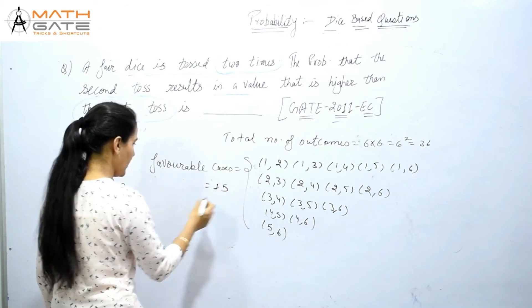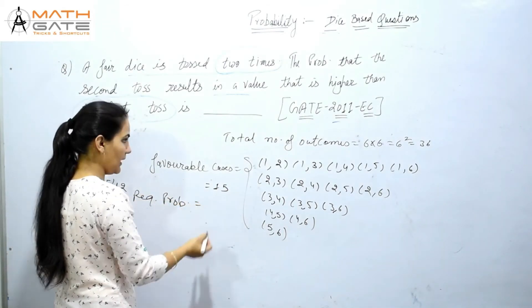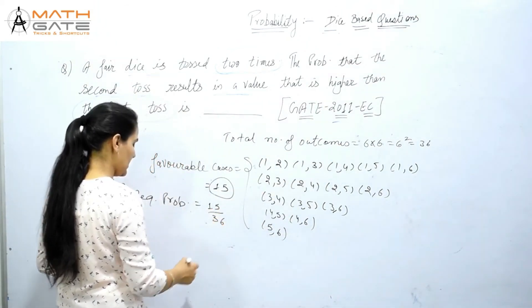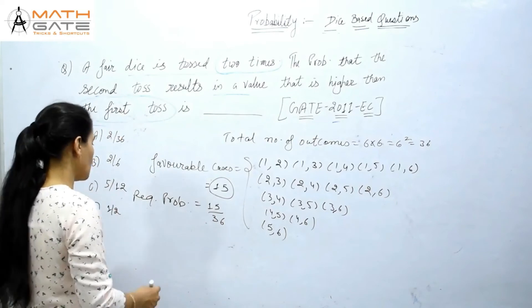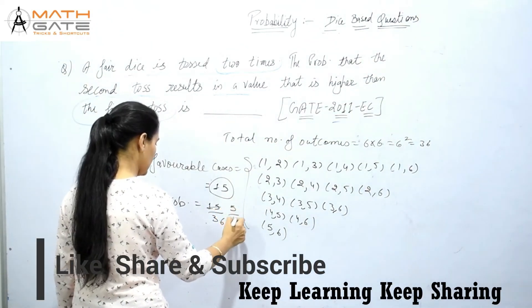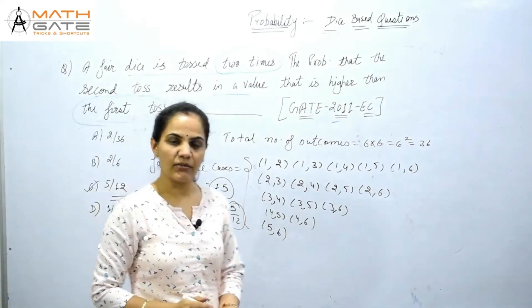Now the required probability is: favorable by total. What is favorable? 15. What is total? 36. So this becomes 15 by 36. When you solve this in the options, it becomes 5 by 12. So the answer is option C.